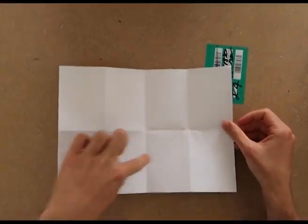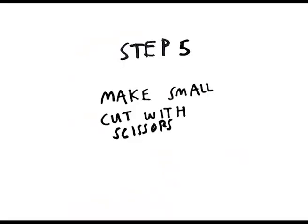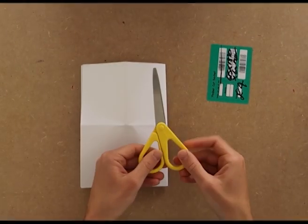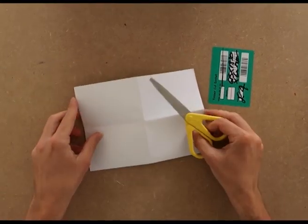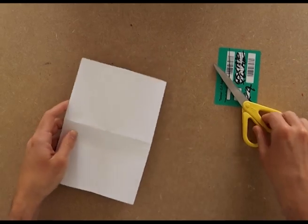We've got one, two, three, four, five, six, seven, eight boxes there. Then we're going to make a little cut with our scissors. This is the only time we need to use these. We're just going to cut straight into the middle of that little cross we've got going on there.